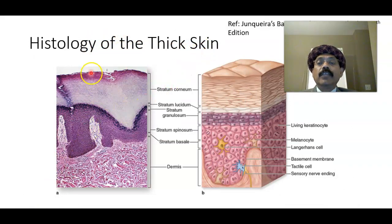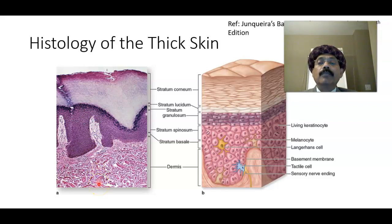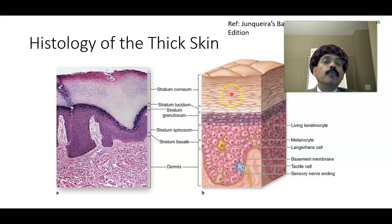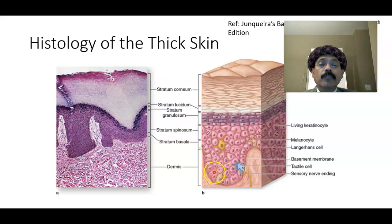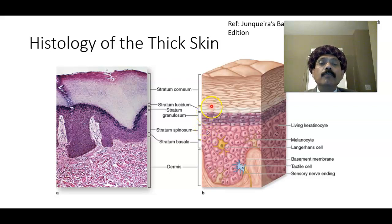This is the histology of the thick skin. The epidermis runs from here to here, and this part is the dermis. The thick skin has a very thick layer of stratum corneum, which is composed of dead epithelial cells — there is no nucleus in this layer. We have multiple layers of epithelium because it is a stratified squamous keratinized epithelium.